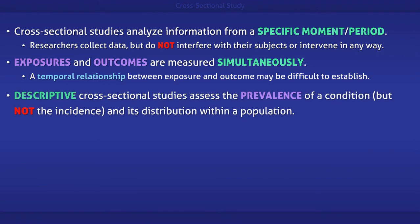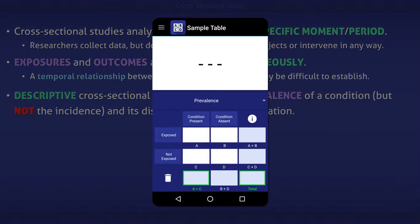Descriptive cross-sectional studies assess the prevalence of a condition, but not the incidence, and its distribution within a population. The prevalence of a condition is simply calculated by dividing the number of people with a condition by the total number of people in the population.